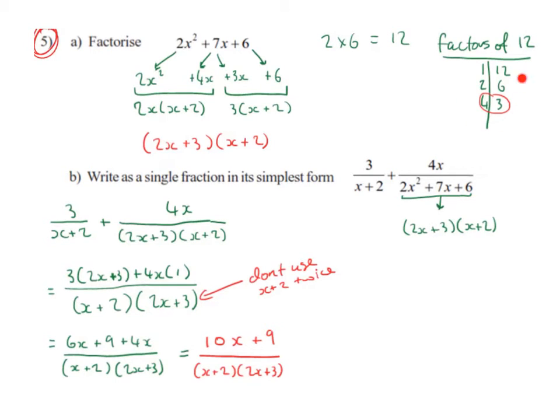Then we look at our factors and we want to choose one of these pairs so that they add or subtract together to give us 7x. Since we have a plus here, we know that the signs are going to be the same, and since we have a plus here, we know they're going to be both plus.